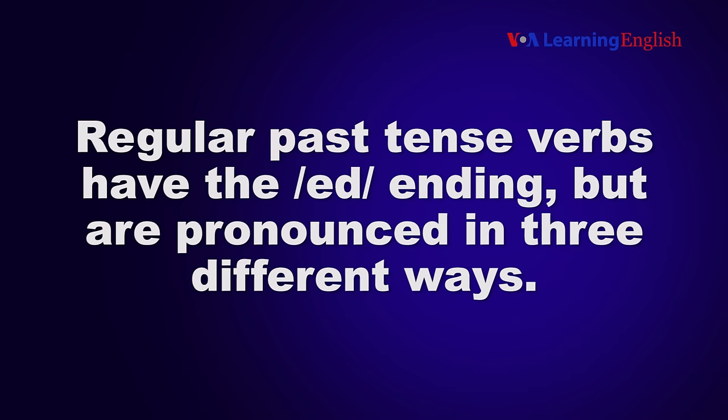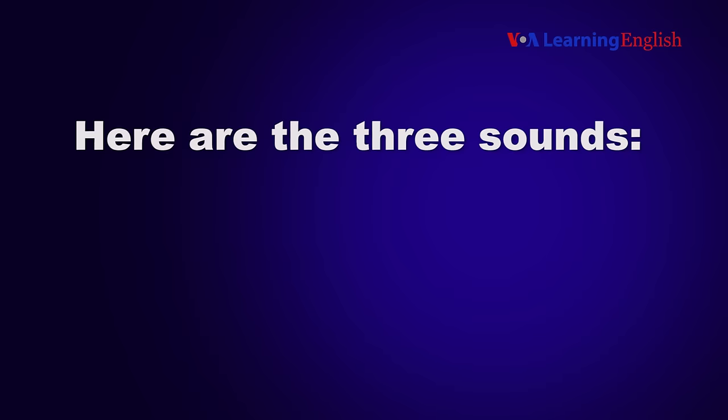Regular past tense verbs have the ED ending, but are pronounced in three different ways. Here are the three sounds: d, id, and t.